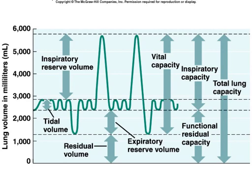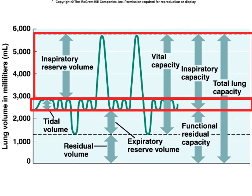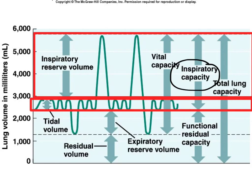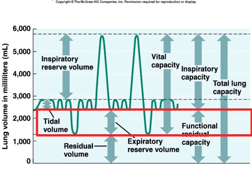In summary: tidal volume is the amount of air moved in and out of the lungs during normal breathing at rest. Inspiratory reserve volume is the amount of air that can additionally be taken in after the initial normal inspiration. Those two volumes together make up the inspiratory capacity. Expiratory reserve volume is the amount of air that can be forced out after the initial expiration during normal breathing.